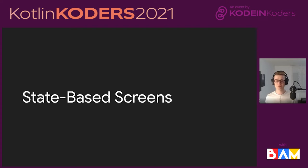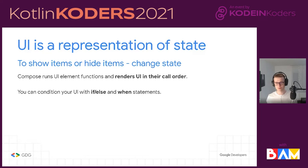When we talk about state-based screens, this is really important in Compose. The UI is a representation of state — most people say it's a function of state. Whatever UI you show has to be declared based on the state you have. This might not be intuitive if you're coming from the imperative side of things such as XML. You can use conditions through if, else, and when statements to change what's represented on the screen at a given moment based on your state.